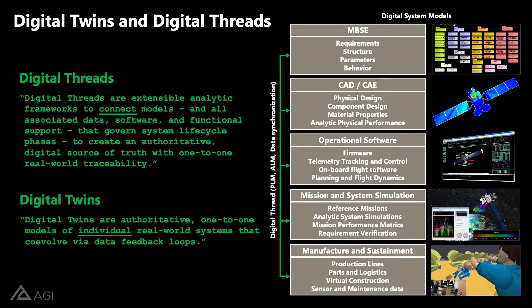There are two other common types of software. First, there's operational software that will actually control an aircraft or spacecraft — onboard software controlling individual components, onboard flight software, and ground systems for flight dynamics, mission planning, and scheduling. Another type, always present in system development, is mission and system simulation. These analytic models analyze and evaluate system performance as designed — verifying that the system being designed will meet its requirements — and this gets revisited at every stage of the life cycle.